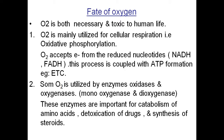Oxygen is mainly utilized for cellular respiration, also called oxidative phosphorylation or the electron transport chain. In this process, oxygen accepts electrons from reduced nucleotides like NADH and FADH2, and this process is coupled with the formation of ATP in the mitochondria.